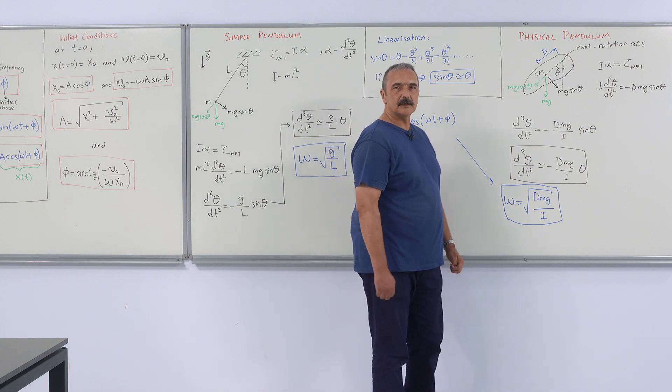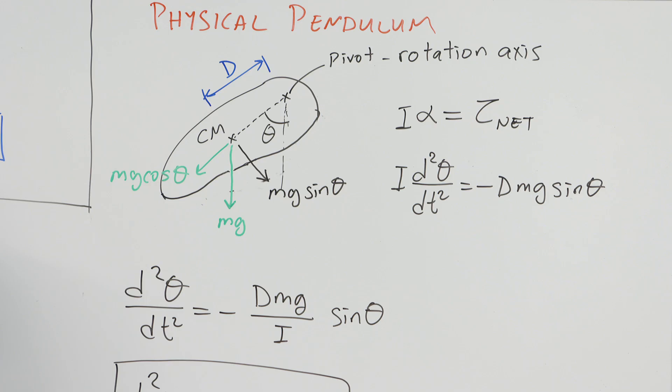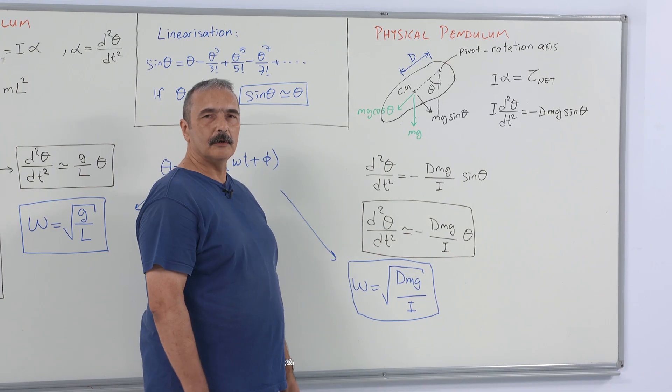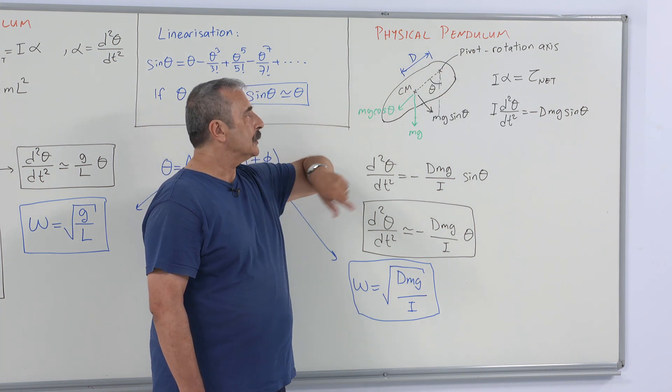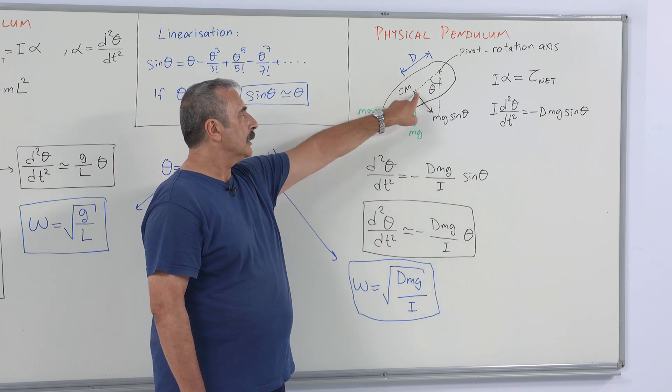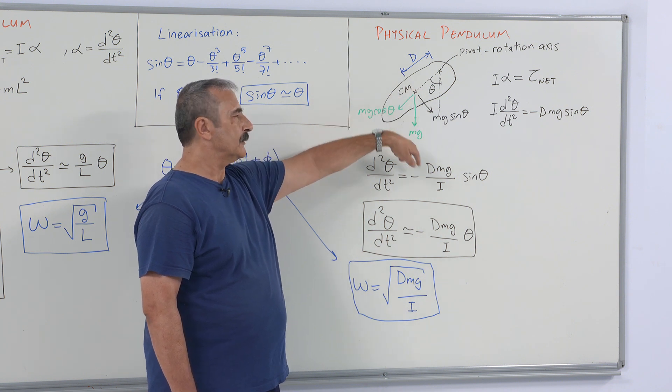The same is for the physical pendulum. Physical pendulum is any rigid object which is free to rotate about some rotation axis. Again, it moves under the effect of gravity.